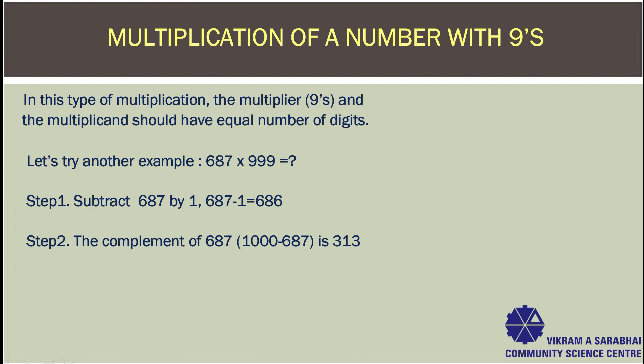Now, place the product of Step 1 — that is 686 — in the beginning, and the product of Step 2 — that is 313 — at the end. So, we get 686313. Hence, the answer will be 686313.